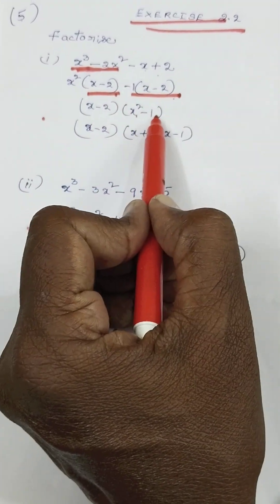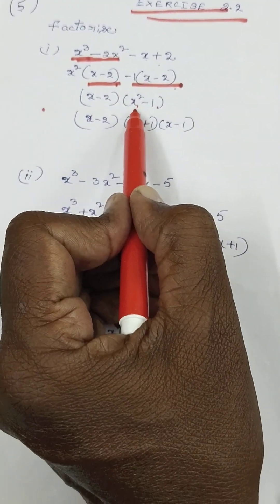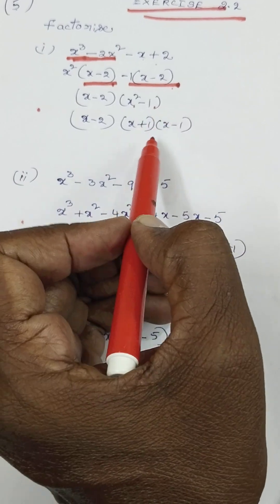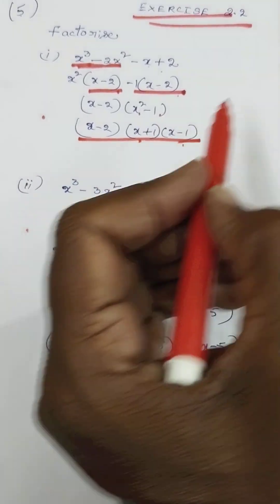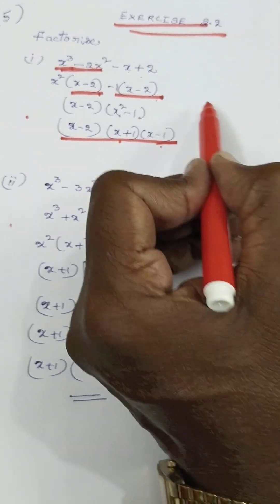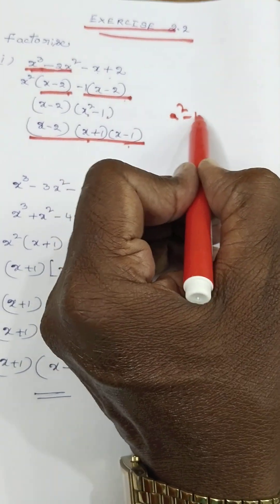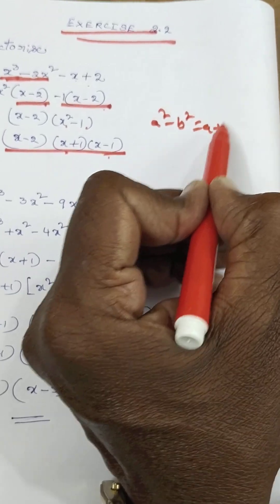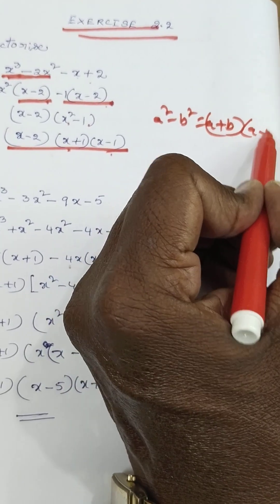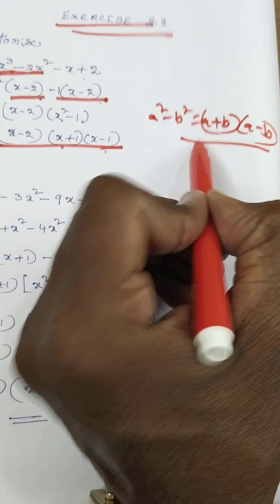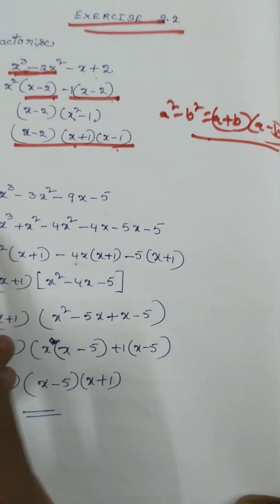Here, we have x squared minus 1 remaining. x squared minus 1 can be written as x plus 1 into x minus 1, because a squared minus b squared equals a plus b into a minus b. This is the formula.